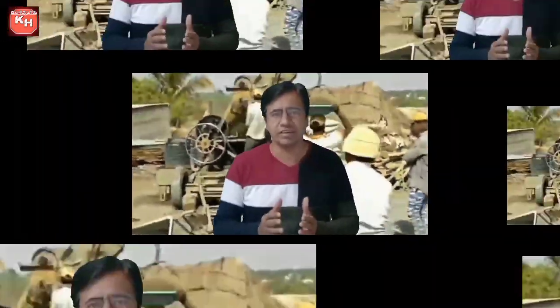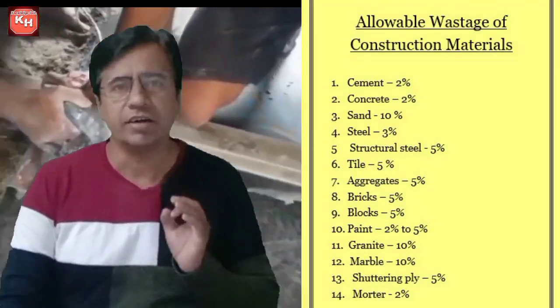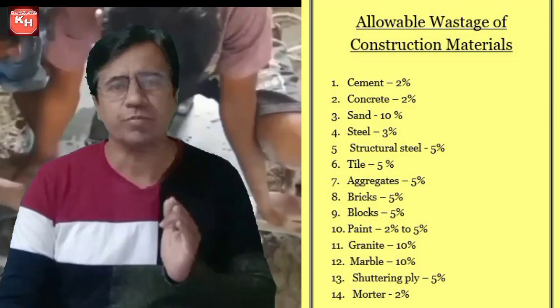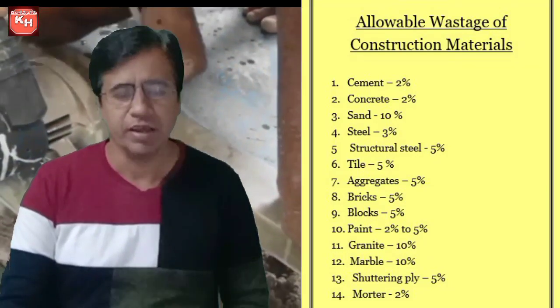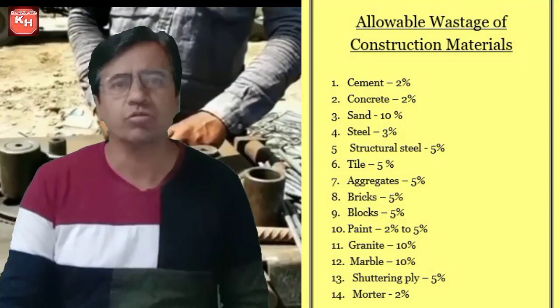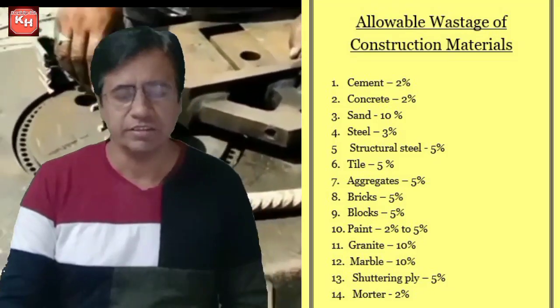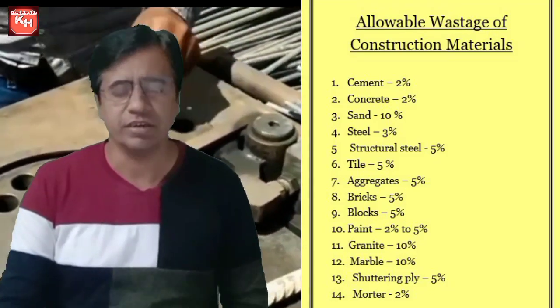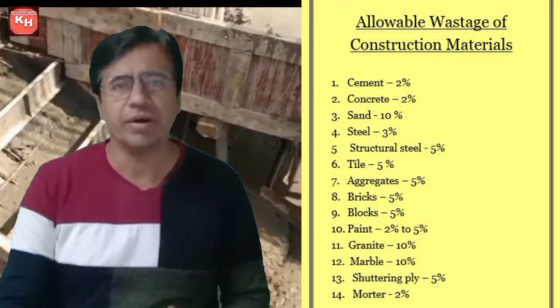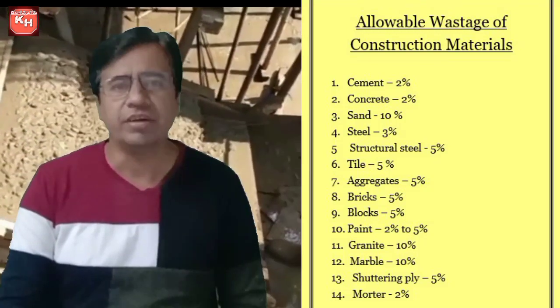Let's look at the percentage of the material's allowable limit. As per IS standard: cement is 2%, concrete is 3% but as per IS standard 2% is considered, sand is 10%, structural steel is 5%, tiles is 5%, aggregates of 10mm, 20mm, and 40mm are 5%, and bricks are 5%.